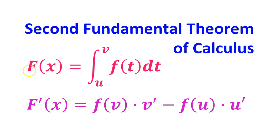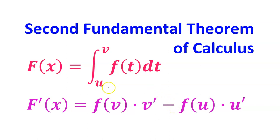Here's how the general form works. We have a function for the lower limit and another function for the upper limit. To find the derivative, you plug in the upper function first and then multiply by the derivative of the upper function — it's a little bit like the chain rule. Then you subtract and plug in the lower function, and multiply by the derivative of the lower function.